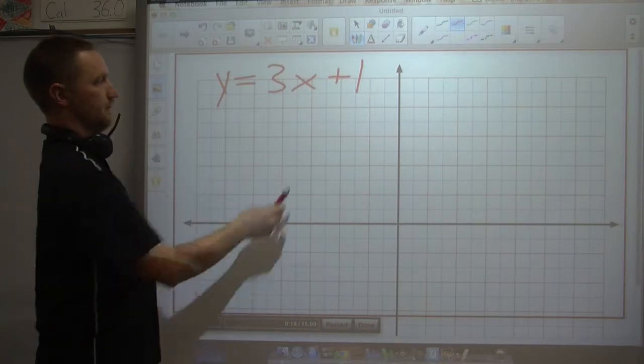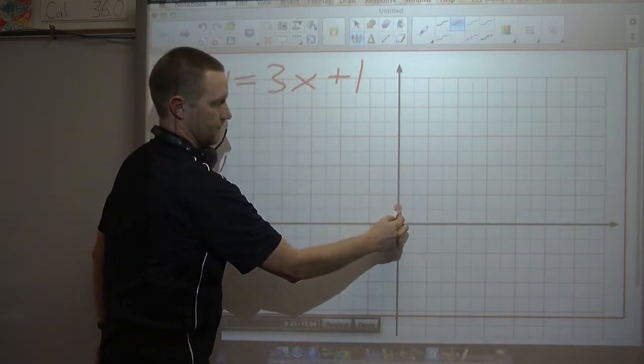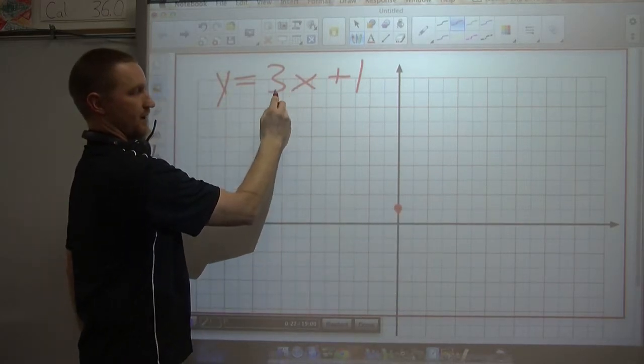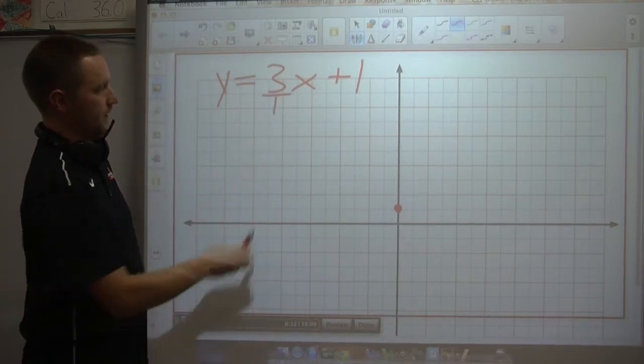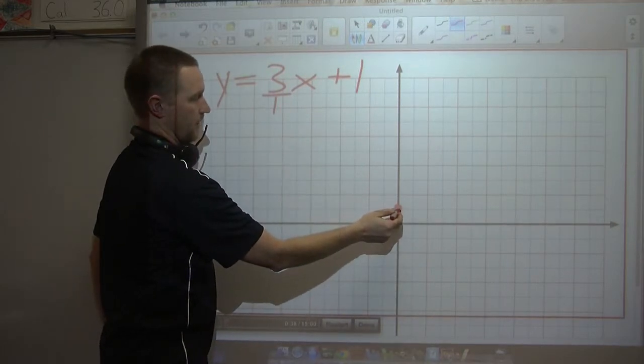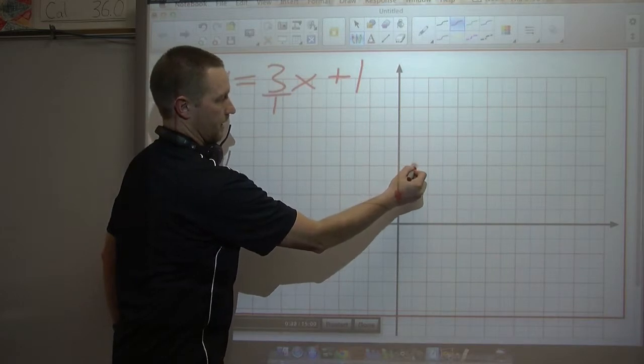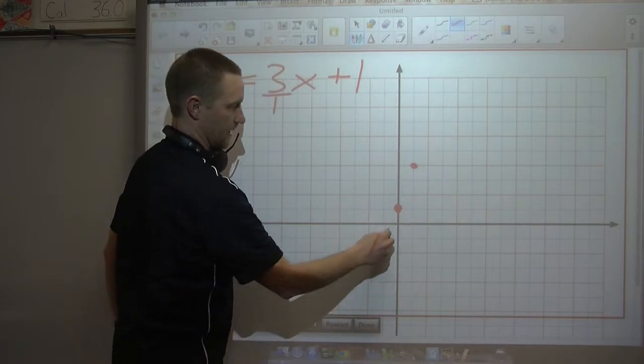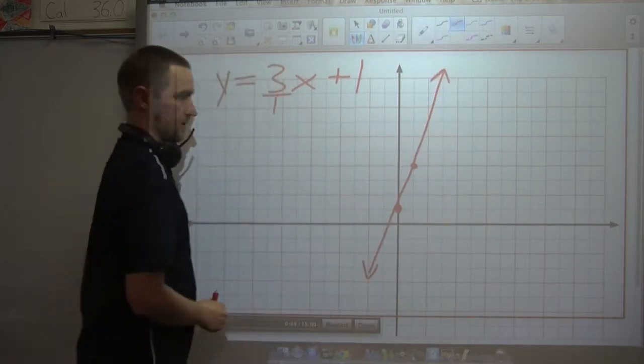And I'm going to start by plotting first my y-intercept, positive 1, on the y-axis. And then my slope, which I find in front of the x value, is a 3. And I like to look at slope as a fraction. So, I just put a 1 underneath it. That gives me my rise and run. So, from that 1 starting point, I need to go up 3 and over 1. And once I have my 2 dots in place, since it's a linear function, I know it's going to be a straight line. I just have to connect my dots to create a sketch of my line.